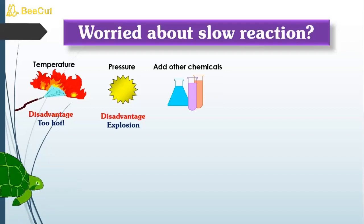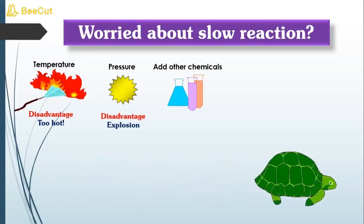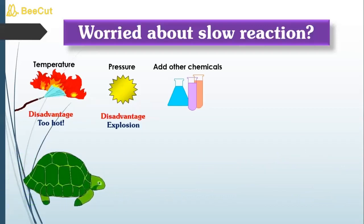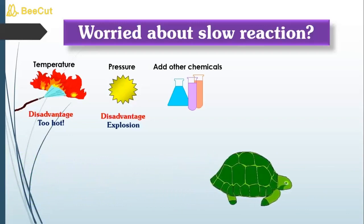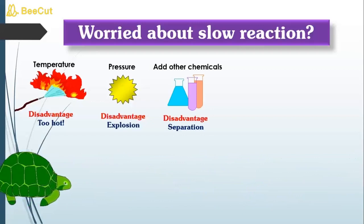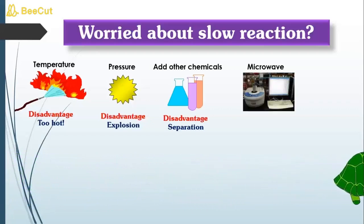The third choice is to add chemicals that can accelerate the reaction, but the problem comes in purification of the product. If a chemical X is added and makes the reaction go to completion, along with the product, many side products plus X will remain in the reaction mass, making purification very challenging. Another choice is irradiating with microwave, but its disadvantage is that it restricts you to only small-scale reactions.